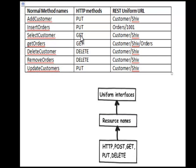By combining the standard HTTP methods with your resource names you can have uniform interfaces. For example, exposing the URL customer/shiv - if anybody calls a PUT on this URL, it will add Shiv to the customers. If you want to get customer data, you call GET on customer/shiv. Uniform interfaces are basically the combination of old HTTP protocol methods - POST, GET, PUT, DELETE - with your resource names, and by doing this you achieve simplified communication. This is the third important principle of REST: keep your interfaces simple.